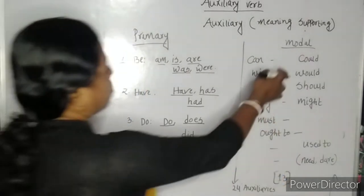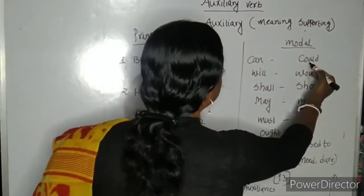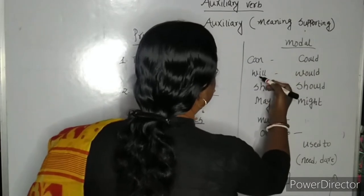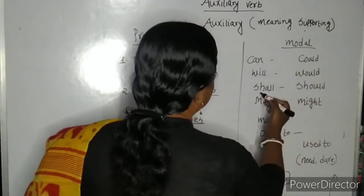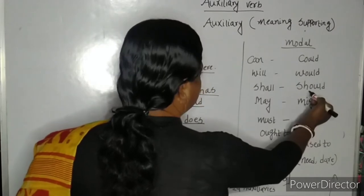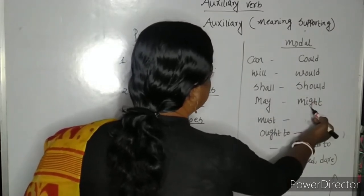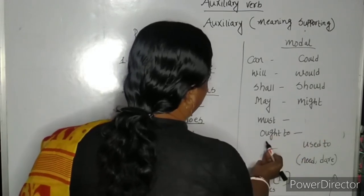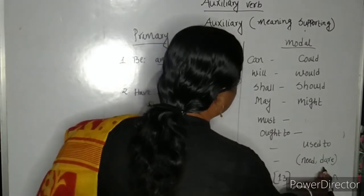Modal auxiliaries: can — could is the past form of can; will — would is the past form of will; shall — should is the past form of shall; may — might is the past form of may; must, ought to, used to, need, dare. These last ones are also called semi-modals.